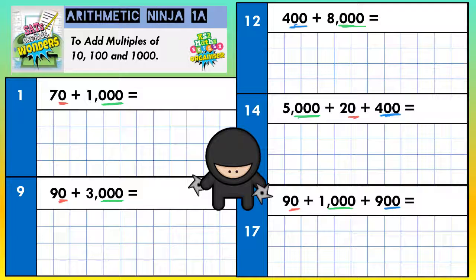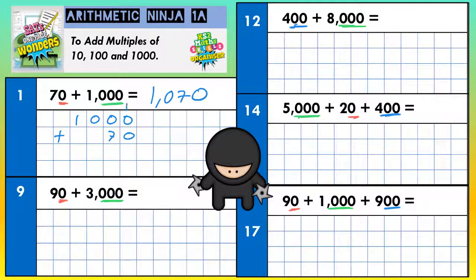You can probably do some of these in your head, although you can always check your answer using a column method if you're not sure. So 1070 — let's just check that with a column method. Make sure you line it up with units and tens properly.